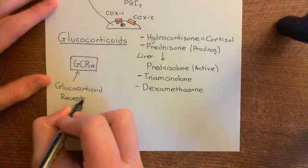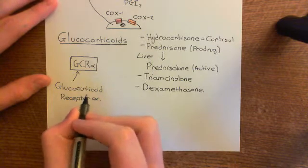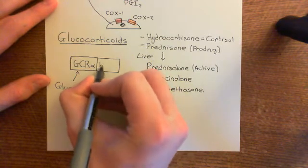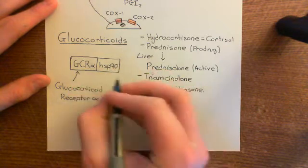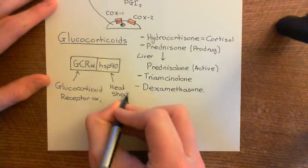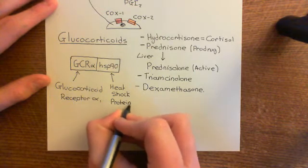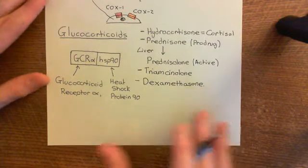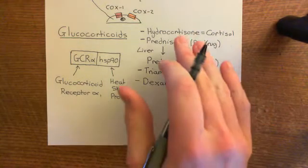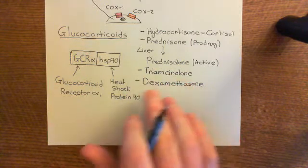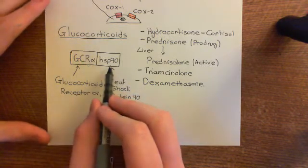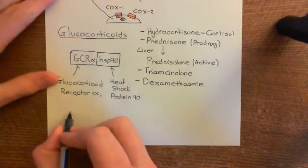In the cytoplasm of your cells, you have glucocorticoid receptor alpha bound to heat shock protein 90. What's going to happen is that the glucocorticoid — whether it's hydrocortisone, prednisolone, triamcinolone, or dexamethasone — is going to come and bind to the glucocorticoid receptor alpha, and when it does, that will cause the heat shock protein 90 to dissociate off from the glucocorticoid receptor alpha.